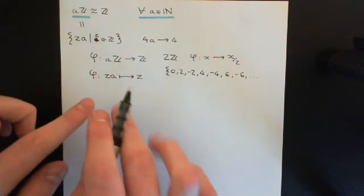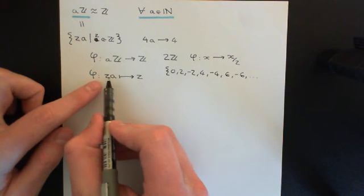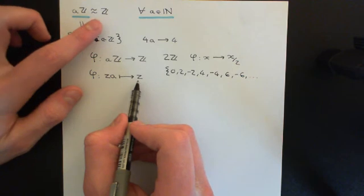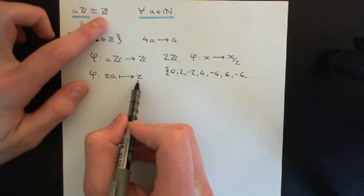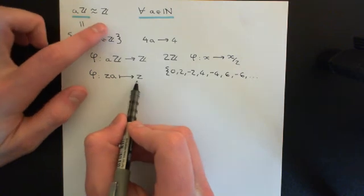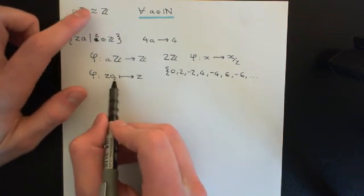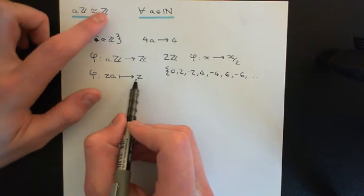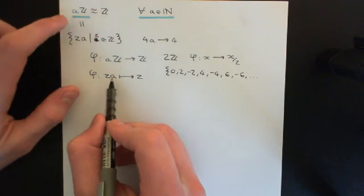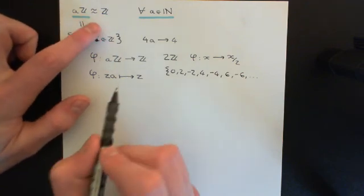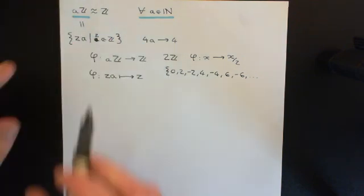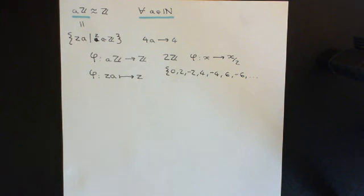This is a bijective map. Every element in aℤ will be mapped onto exactly one element in ℤ, and every integer in ℤ will have only a single element from aℤ being mapped onto it — so it is injective. It's also surjective, because any integer in the codomain will have something from aℤ being mapped onto it. So it is bijective — a nice relabeling map that relabels the elements here with elements there.